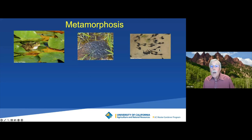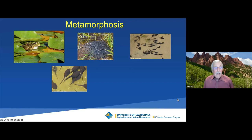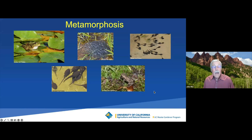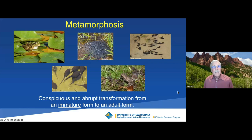The pollywogs swim around eating algae. A few weeks later, you start seeing hind legs developing, then front legs. They start losing their gills and developing lungs, and a few weeks later, out pops a little tiny but fully developed frog. Metamorphosis is this conspicuous and abrupt change from the immature forms, like the pollywogs, into the adult form. We as human beings do not undergo metamorphosis, but some animals do — and insects do.